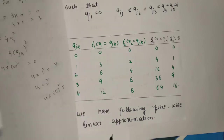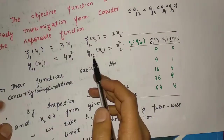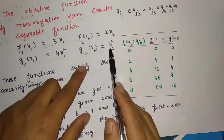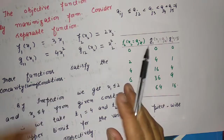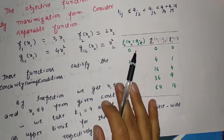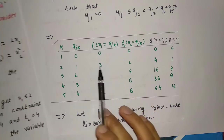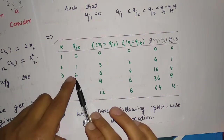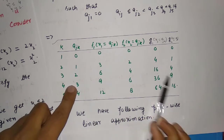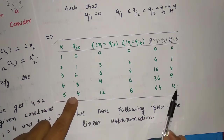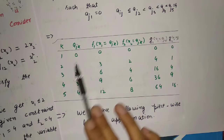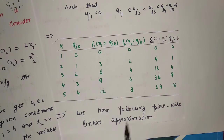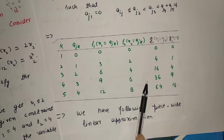In the same way I find g₁₂(x₂) = x₂². Substituting x₂ = a_jk: 0² = 0, 1² = 1, 2² = 4, 3² = 9, 4² = 16. This is our desired table — if you have any doubt you can ask me, because this is very important in this question.